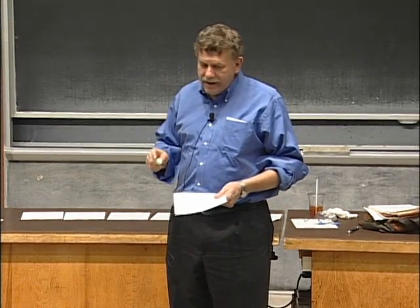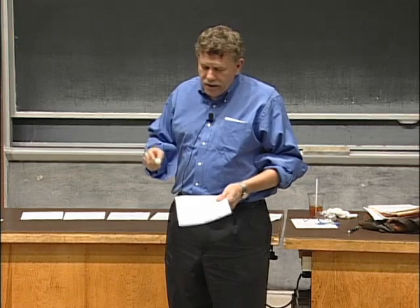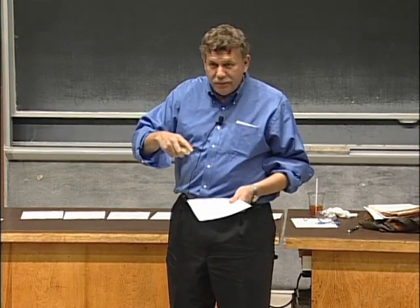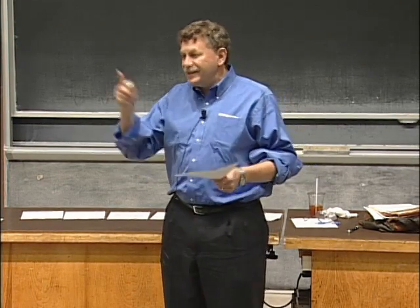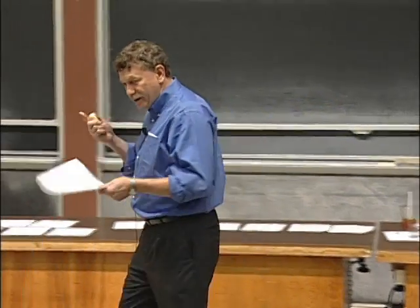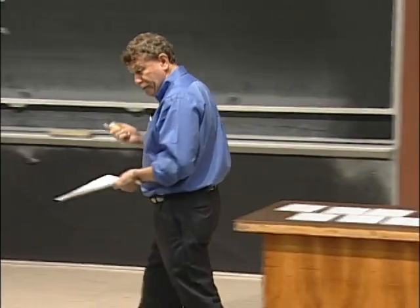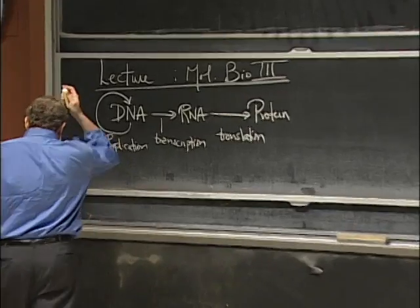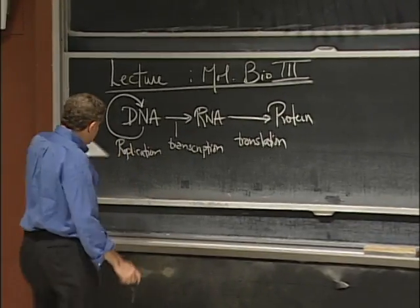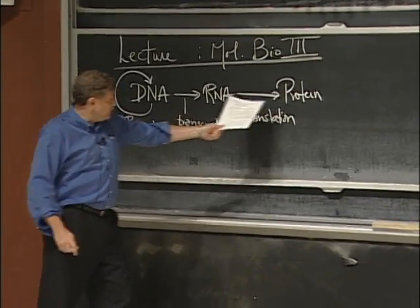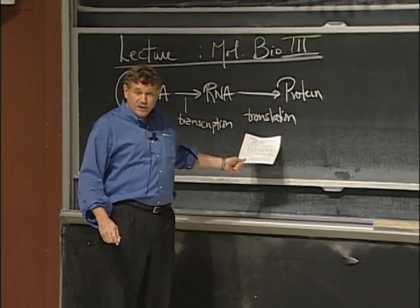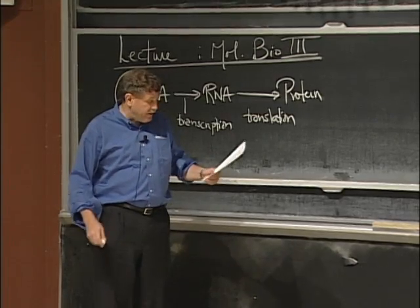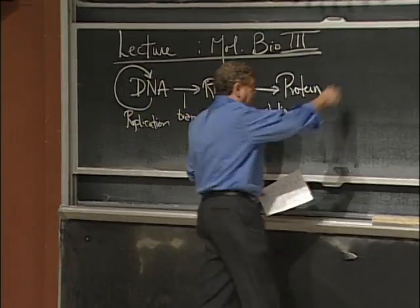Sometimes people say the central dogma was proved wrong because RNA can go back to DNA. Well, actually, that was even anticipated right at the very beginning when they realized RNA and DNA were essentially equivalent information. The key step of converting nucleic acid information into protein information is translation, and that's the last bit we have to fill in and talk about today.